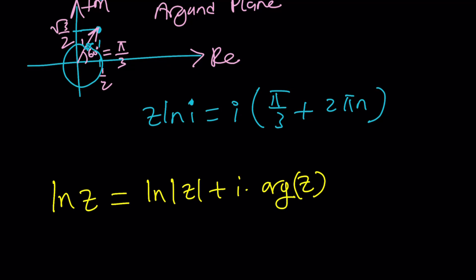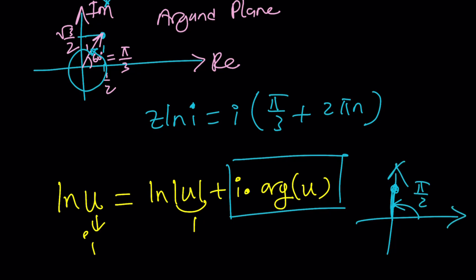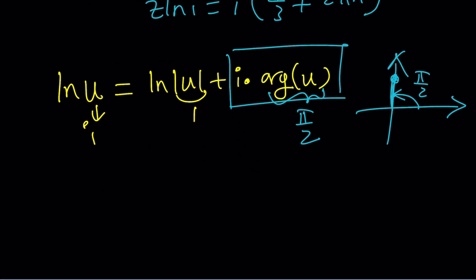By the way, I should probably use a different letter, because the z, this z is not the same as our z. It's a different z. So let's go ahead and change the variables here. This should be argument of u, and we should be good. So now, what you need is to replace u with i, and absolute value of i is 1. So ln 1 is 0. This is a real valued logarithm. So you end up with this. And the argument of i, what is the argument of i? On the Argand plane, it's basically pi over 2. We use the polar coordinates a lot, or the polar form.